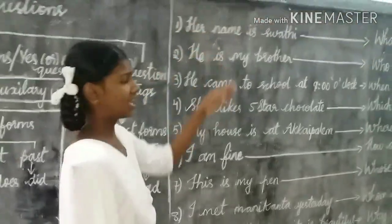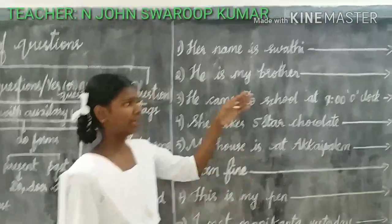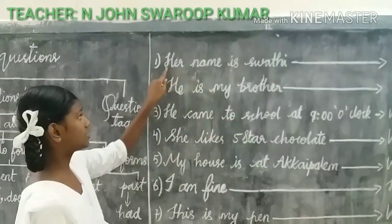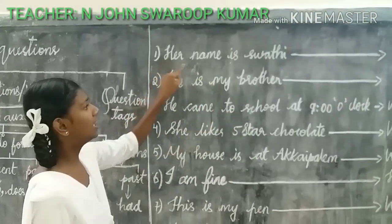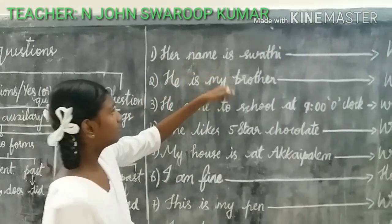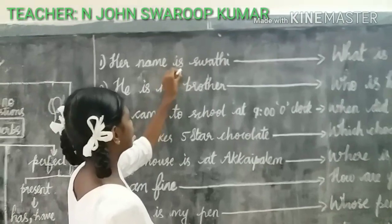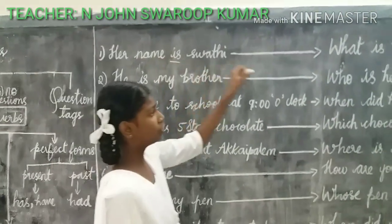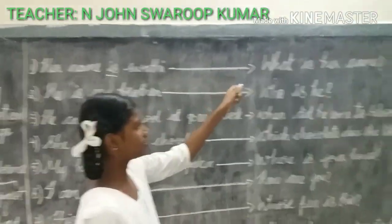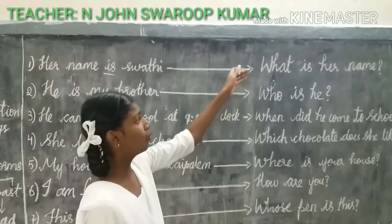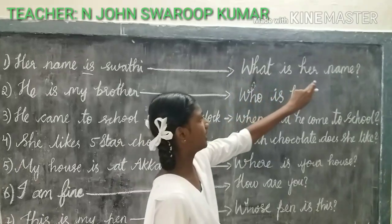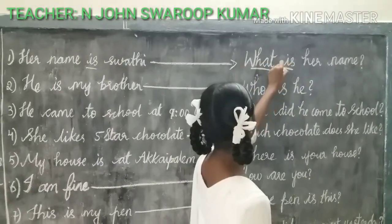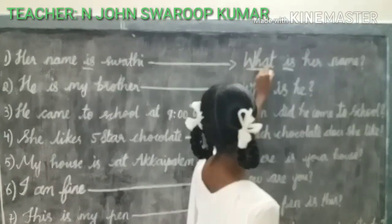These are the answers used to frame the question. The first example is: her name is Swati. Here 'is' is an auxiliary verb. We use the WH question word 'what.' So the framed question is: What is her name?